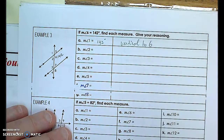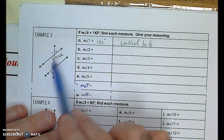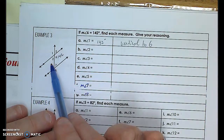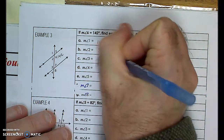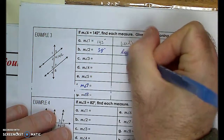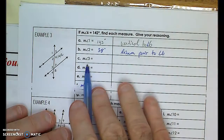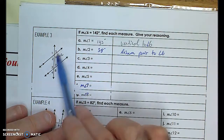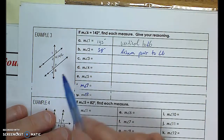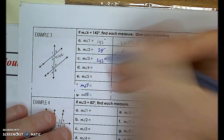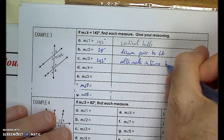Let's try angle two. Angles two and six are a linear pair — they add up to 180 degrees. If angle six is 142, then angle two has to be the difference, which is 38 degrees — linear pair to angle six. Angle three is alternate on the opposite side of the transversal and it's interior — alternate interior — and we know they're congruent. So angle three has to be 142 degrees — alternate interior to angle six.